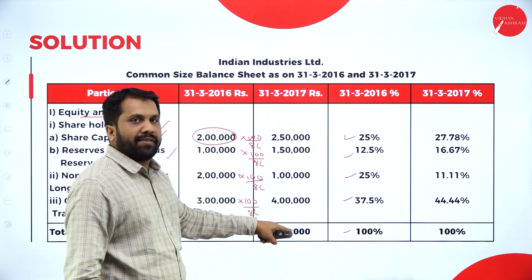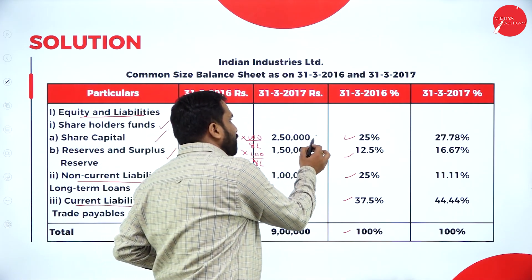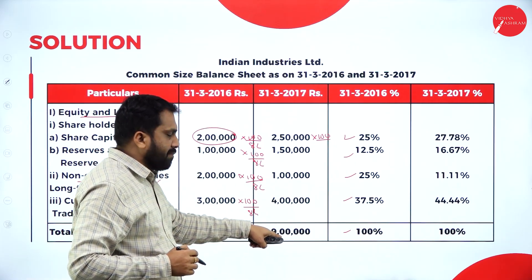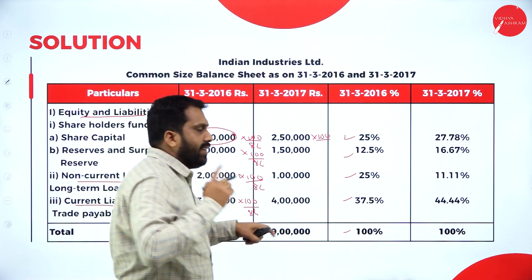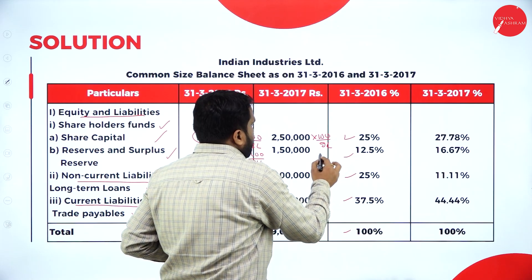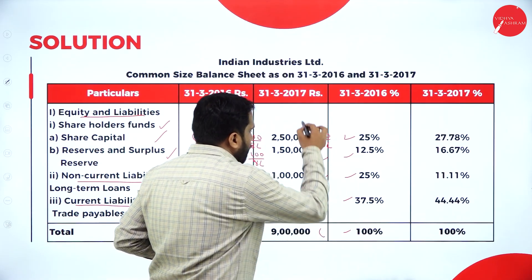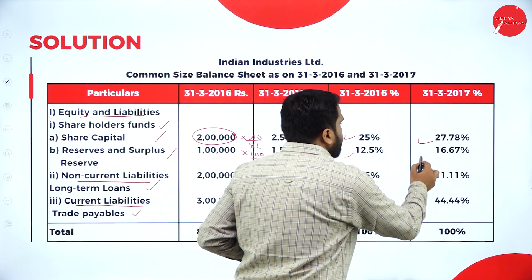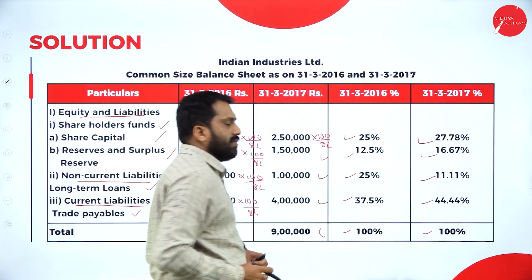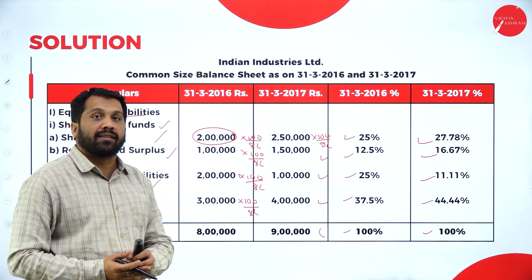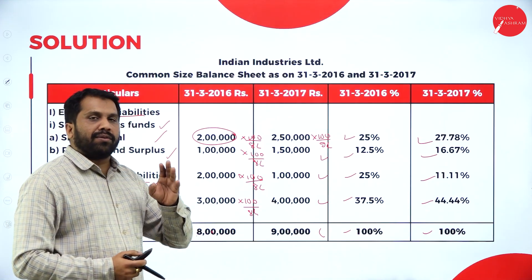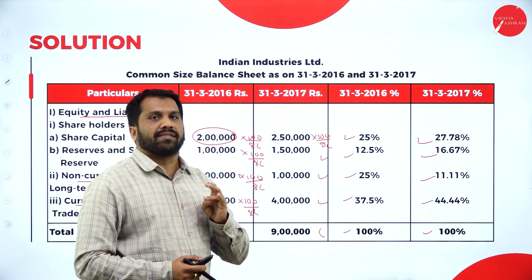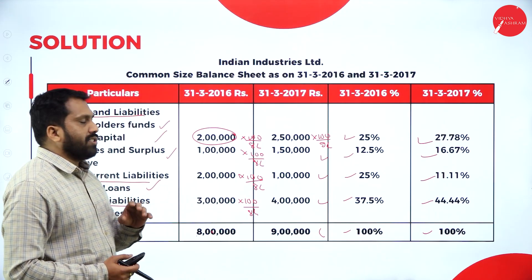Now come to 2017. 2 lakh 50,000 into 100 divided by 9 lakh — similarly you have to do all the calculations. If you do this calculation, your answer will come out. Hope you are all clear with the common size. You learned what is comparative, and you learned what is common size — here the same procedure applies.